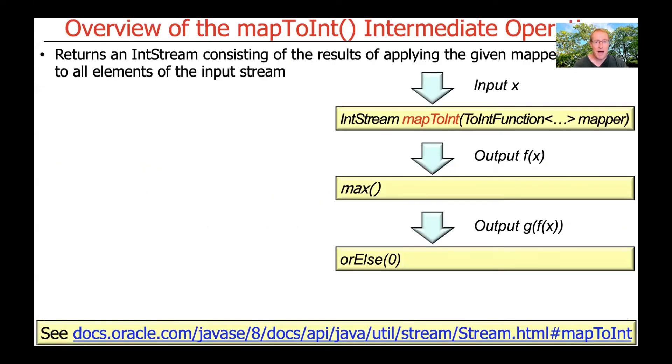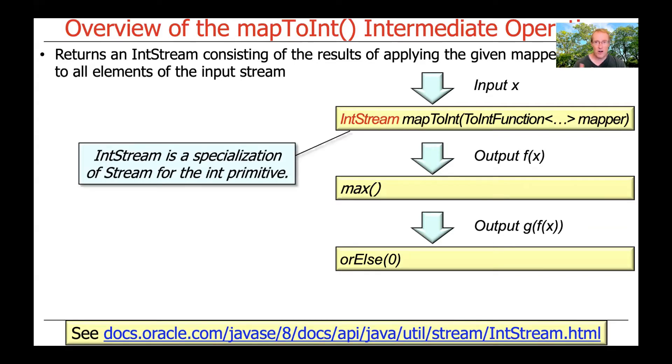Let's talk next about mapToInt. MapToInt is a variant of map that returns an IntStream instead of a stream of reference types. The stream contents will consist of the results of applying the given mapper function to all the elements in the input stream. So just like with map, it's going to apply it for all elements.